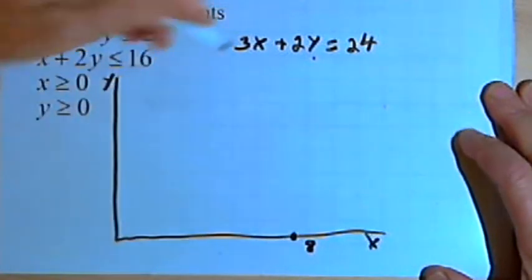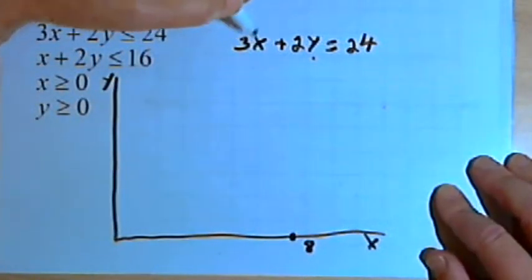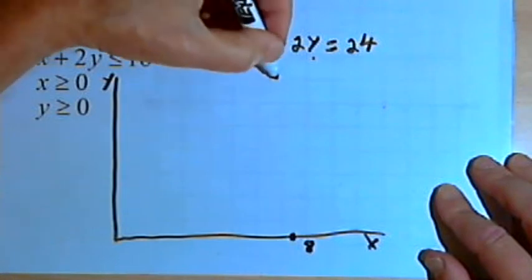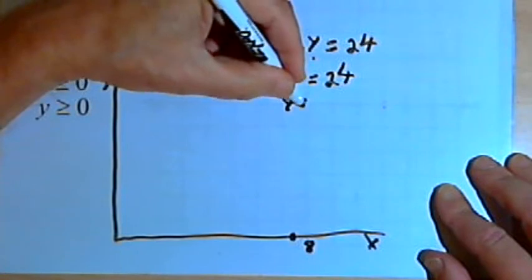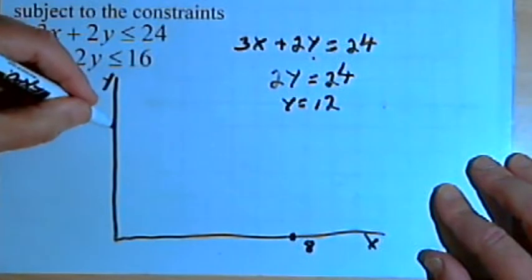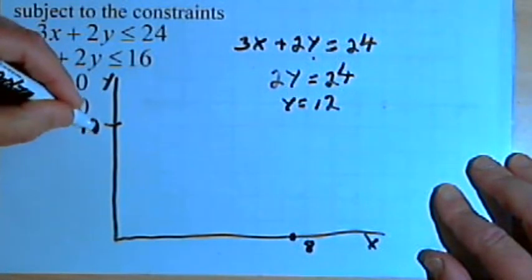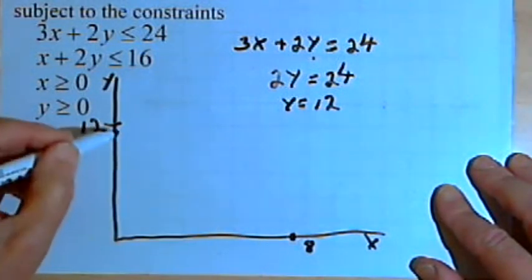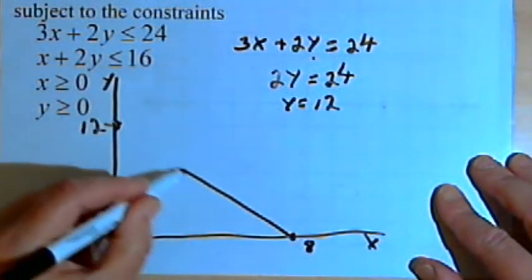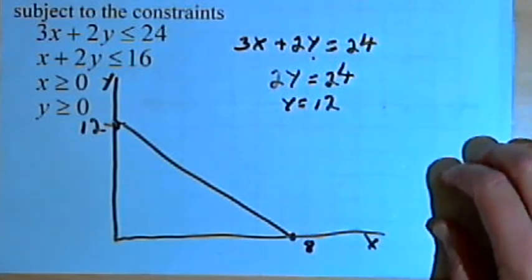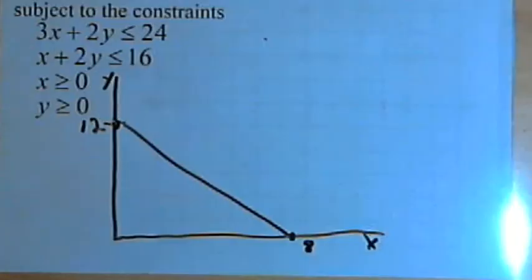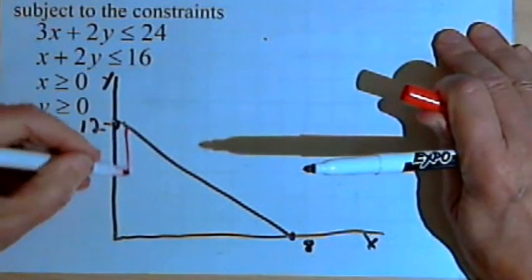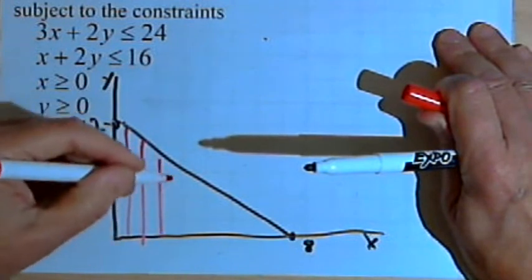To find the y-intercept, we'll set x equal to 0. So when x is 0, all I've got left is 2y equals 24, and that would mean y equals 12. I've got 2 points, so I can draw the line for that graph. Going back to the original inequality, it was less than, so I'm going to shade everything below that line.